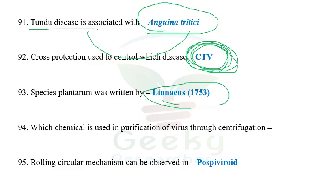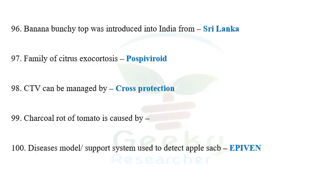The next question: 'Species Plantarum' was written by Linnaeus. The next question: which chemical is used in the purification of virus through centrifugation? I don't know the answer — if you know, comment below. The next question: rolling circle mechanism can be observed in Pospiviroidae but cannot be observed in Avsunviroidae. At least one or two questions can be expected on the differences between Avsunviroidae and Pospiviroidae — rolling circle mechanism is present in Pospiviroidae and absent in Avsunviroidae.